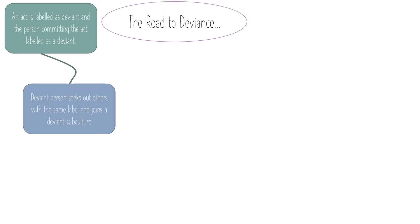Becker also argued — and this is the same as when we looked at education — that when a person is given that label, they seek out other people with the same label, and that's when they're likely to join a deviant subculture. Humans inherently look for people who are similar to them for safety and security. So Becker argued that people with a deviant label seek out others with that label and form a subculture — a group with their own norms and values where that deviance is considered normal.